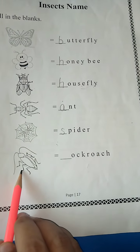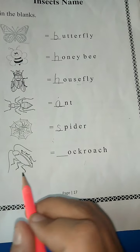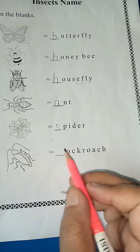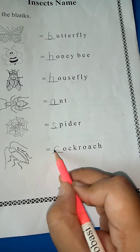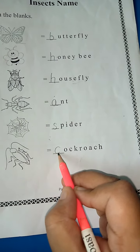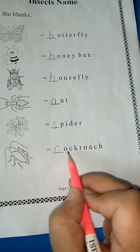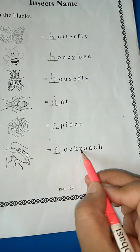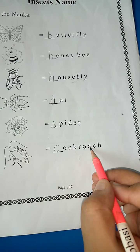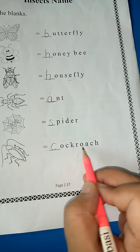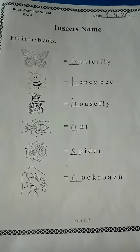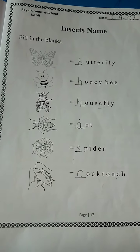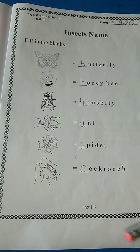Yes. What is this? This is cockroach. Cock — so whose sound do we hear? C. C-O-C-K, cock. R-O-A-C-H. Cockroach. So class KG2, page number 17 is also done.